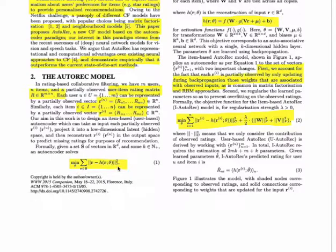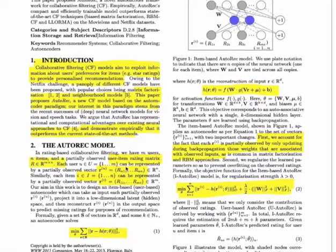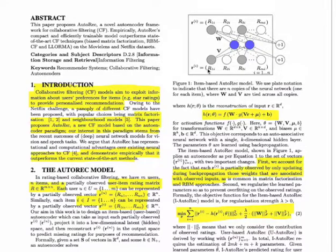Essentially, they are trying to reduce squared error matrix as one of their loss functions. So essentially this is the design. Here we have, for a given item, different ratings, and here we have an autoencoder model in between which is trying to do a dimensional reduction over the number of parameters.